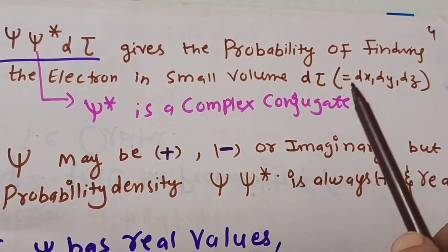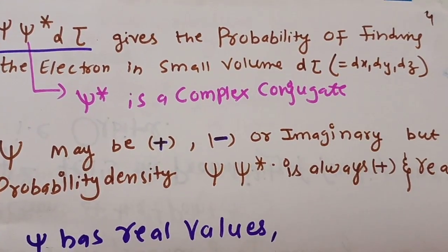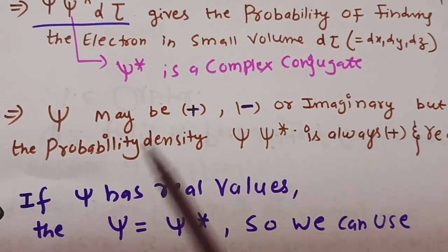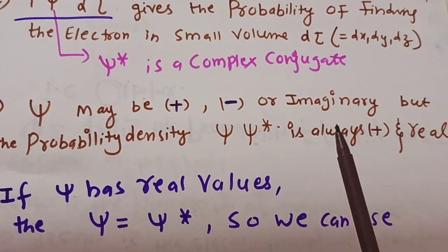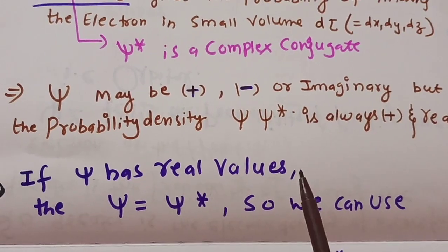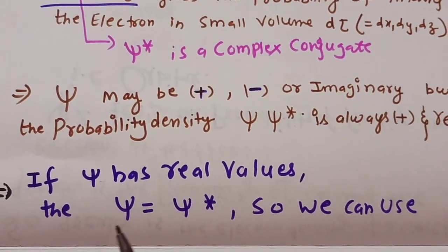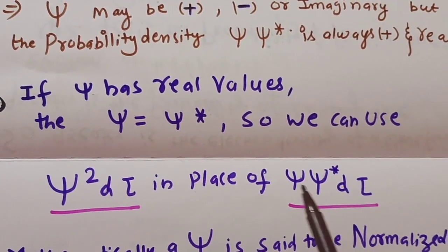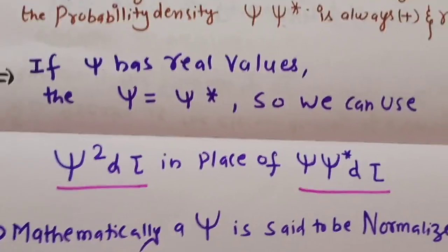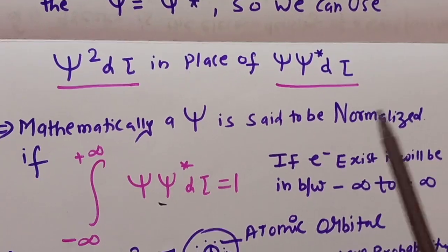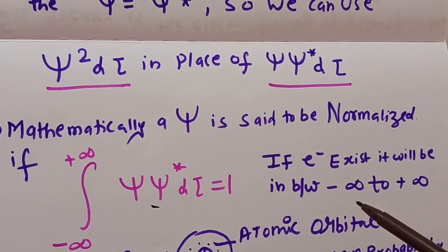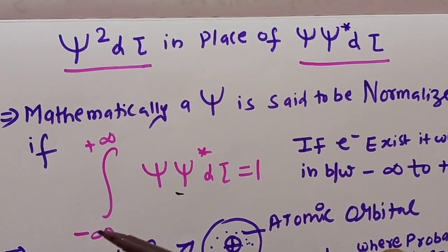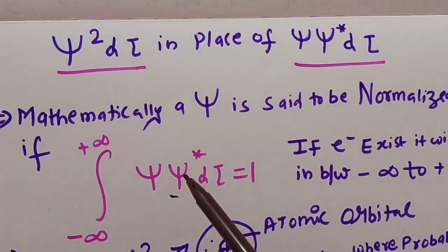As explained, dτ is a small volume around the nucleus where the electron can be found, and psi-star is the complex conjugate of psi. Psi may be positive, negative, or imaginary, but the probability density — that is psi·psi-star — is always positive and real. If psi has real values, then psi equals psi-star, and we can replace psi-star in the equation and write psi·psi-star·dτ as psi²·dτ. Mathematically, psi is said to be normalized if the integral from negative infinity to positive infinity of psi·psi-star·dτ equals 1.